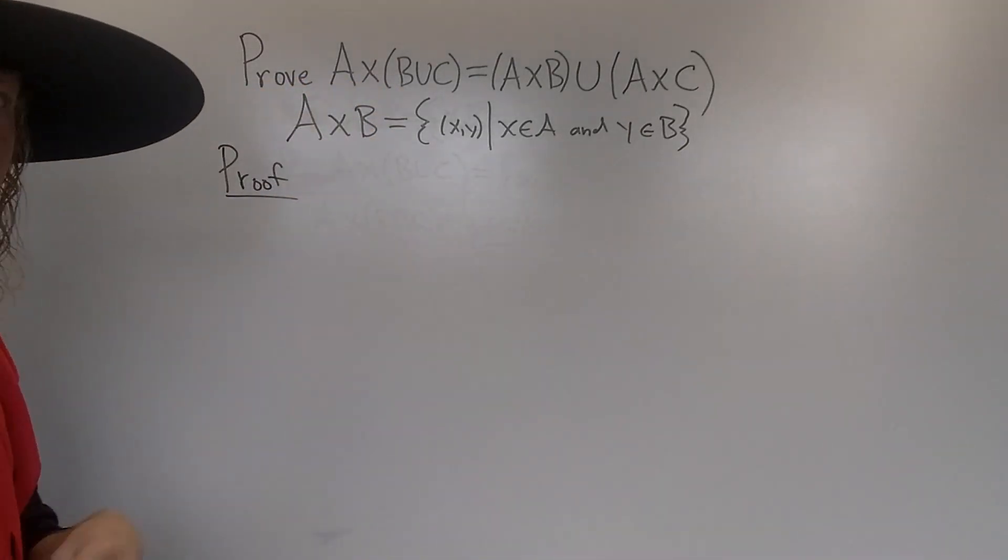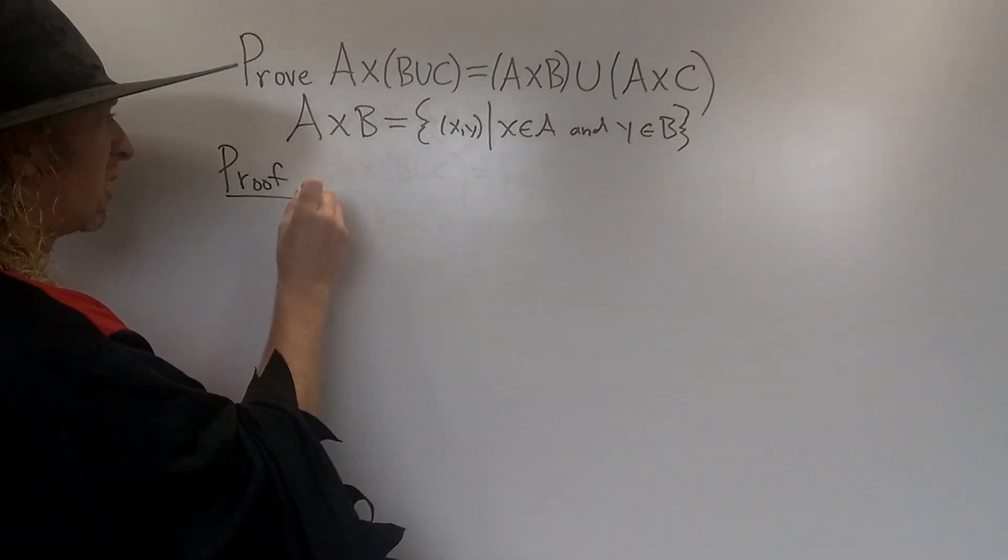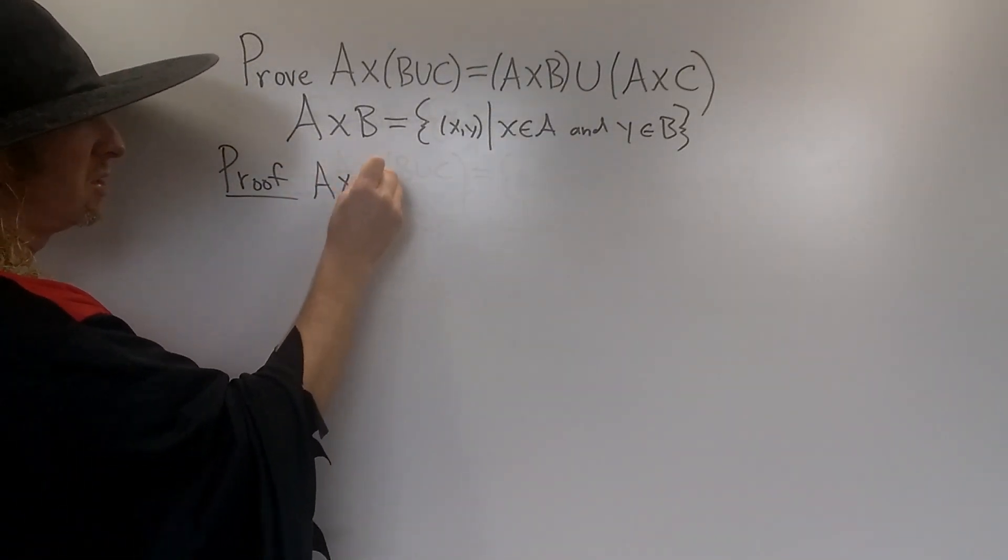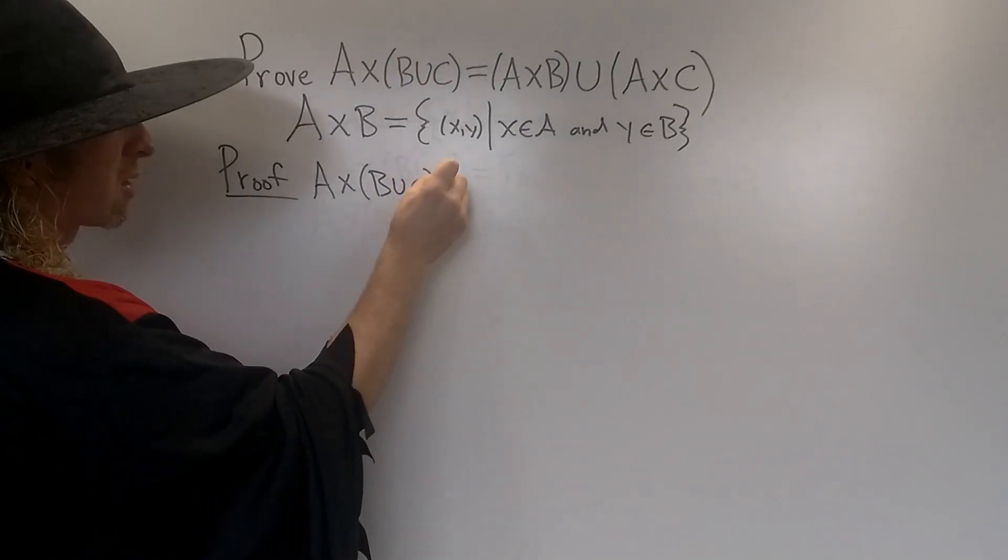So we'll start by writing down the left hand side. So A×(B∪C). This is A×(B∪C).